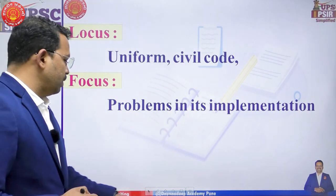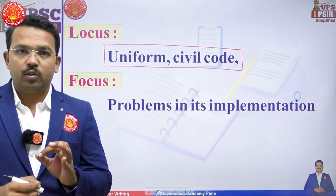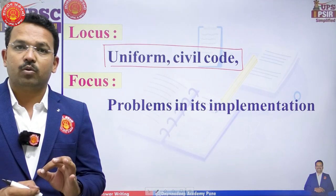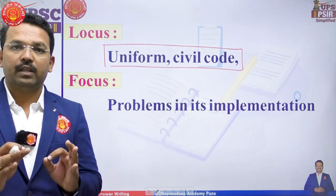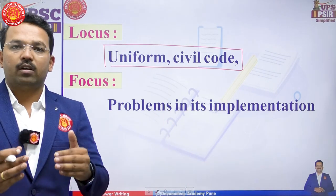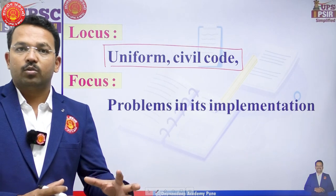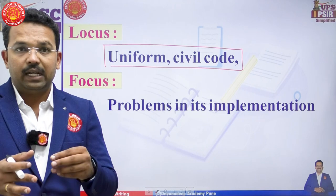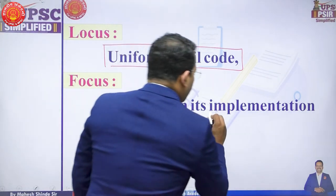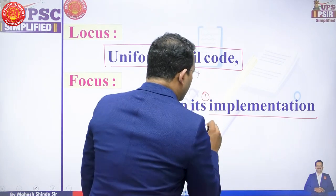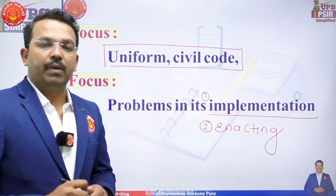Let's understand the locus and the focus of the question. The Uniform Civil Code is the locus — they are not asking what it is or why it is significant. The focus is: what are the difficulties in making a law or enacting provisions related to the Uniform Civil Code? So the focus is problems in enacting the Uniform Civil Code and, once enacted, problems in its implementation.